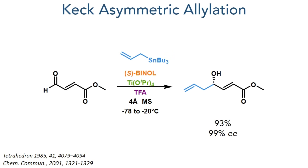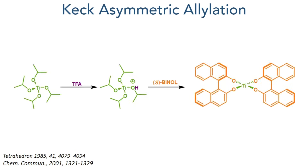So let's start the synthesis with this Keck asymmetric allylation. This reaction involves the addition of allyl tributyltin to an aldehyde. This uses titanium isopropoxide, TFA, and a chiral S-BINOL ligand to produce the target compound with a 93% yield and a 99% ee. The TFA first protonates the isopropoxide ligands, which weakens their coordination to the titanium and makes it easier for the S-BINOL ligand to displace them.